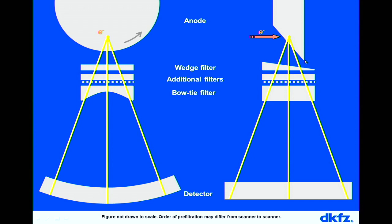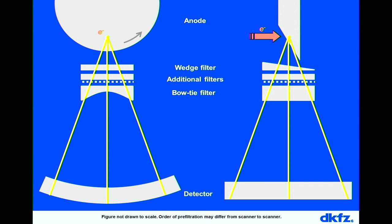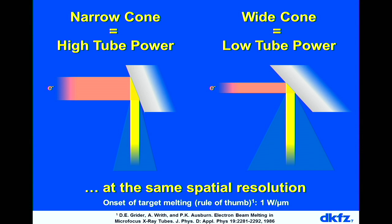CT systems differ in detector size. A very large detector requires a smaller anode angle. The difference is that the electron beam must be narrower when hitting a large-angle anode, while the beam can be much thicker for a small-angle anode, allowing more tube power. There is no difference in spatial resolution because the patient sees the X-ray tube from below. The narrow cone beam allows high tube power; the wide cone beam — with 256 or 320 detector rows — does not allow such high tube powers.